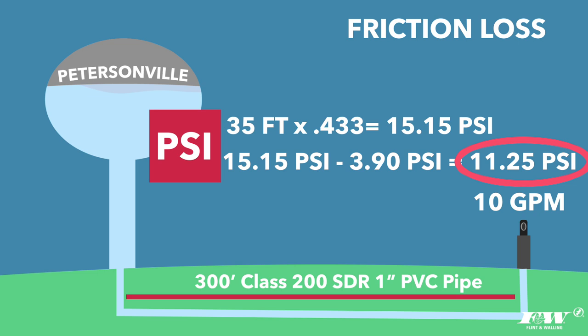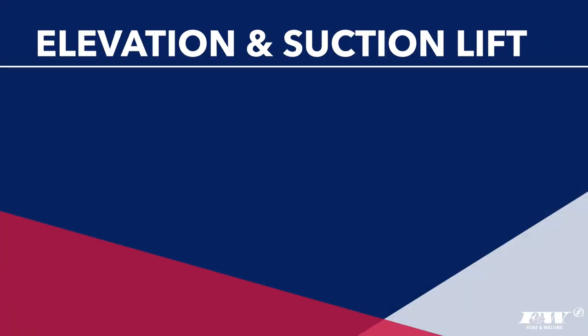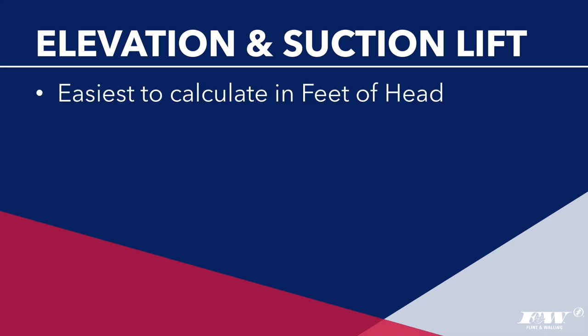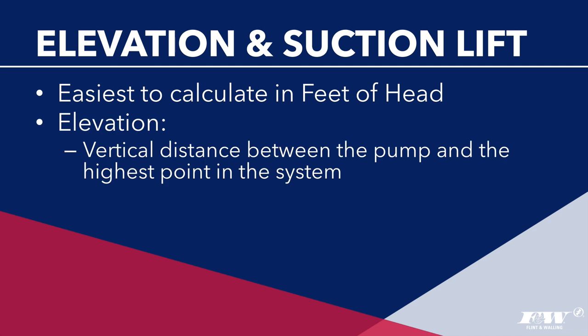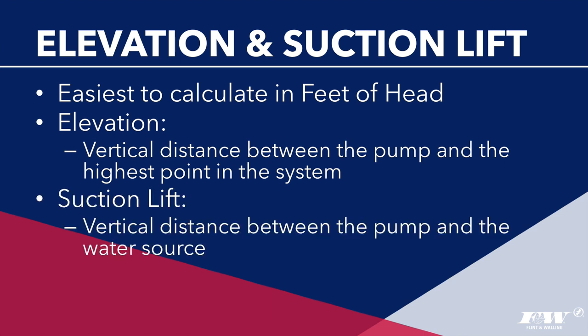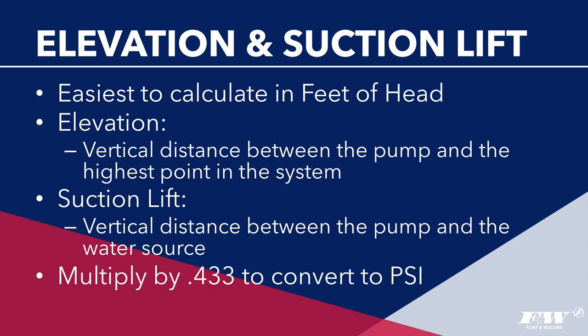There are two additional terms that come up when sizing a pump: elevation and suction lift — both easiest to calculate in feet of head. Elevation is the vertical distance between the pump and the highest point in the irrigation system; the number of feet of vertical distance equals the feet of head of pressure difference between those two points. Suction lift is the vertical distance between the pump and the water source it draws from, used when sizing a centrifugal pump drawing from a well, lake, pond, or stream. To convert to PSI, multiply feet of head by 0.433.